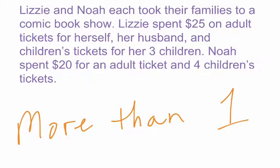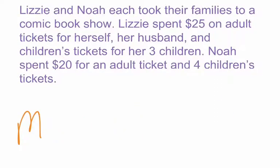So that's what we're doing when we're talking about a system of equations — more than one equation. Let's look at this word problem and see if we can get a system out of this. It says: Lizzie and Noah each took their families to a comic book show. Lizzie spent $25 on adult tickets for herself and her husband, and children's tickets for her three children. Noah spent $20 for an adult ticket and four children's tickets. So it seems like a lot, but really we have two different sets of information.